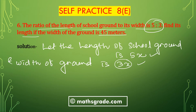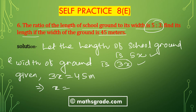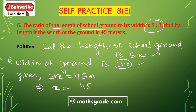It is given that the width, which is 3x, equals 45 metres. Transposing 3 to the right-hand side — since 3 is multiplied with x, this changes to division — so x equals 45 divided by 3, which gives x equals 15 metres.